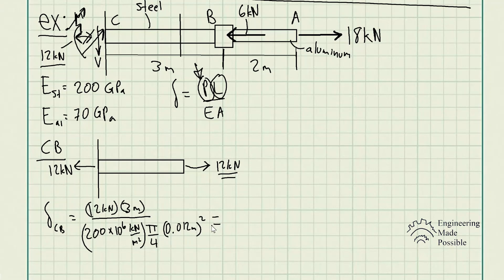And so the deformation of this rod from C to B, basically the deformation at point B which is what we're being asked for, is 0.00159 meters or 1.59 millimeters is how much this rod deforms. So we solved how much this segment deformed at point B, deformed by 1.59 millimeters here.